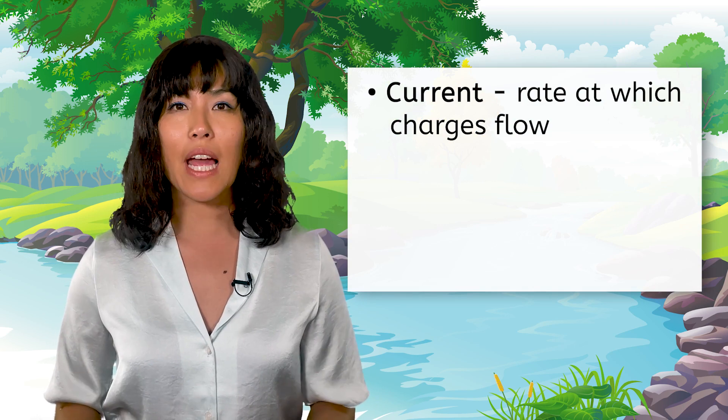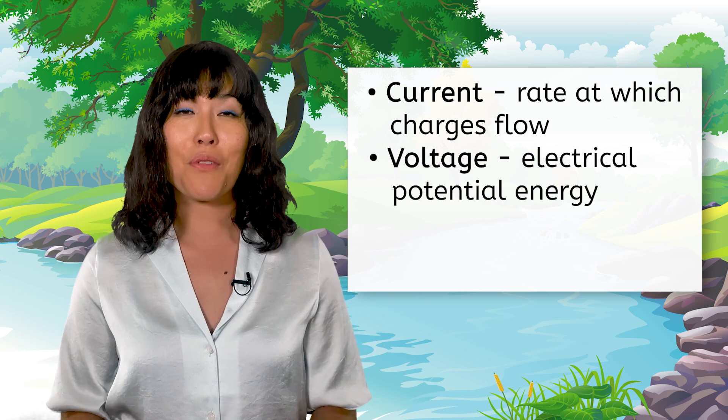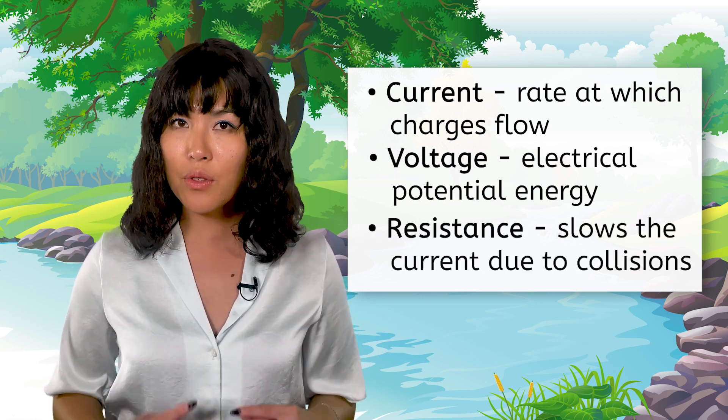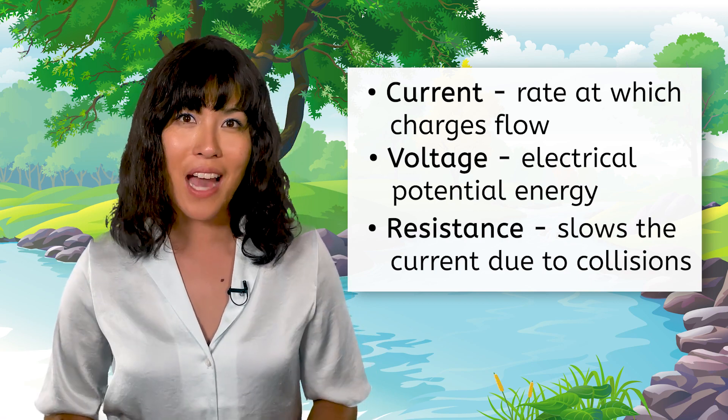As we went through the lesson today, we saw how the properties of electricity can be related to a river. Current, voltage, and resistance can all be used to describe the flow of electrical charges through a wire. Current describes the rate at which the charges flow. Voltage is the electrical potential energy that provides a push to the charges, and resistance in a wire can slow the current when charges are constantly forced to collide with stationary atoms. Next time, we'll apply these concepts to see how we can build some simple circuits.